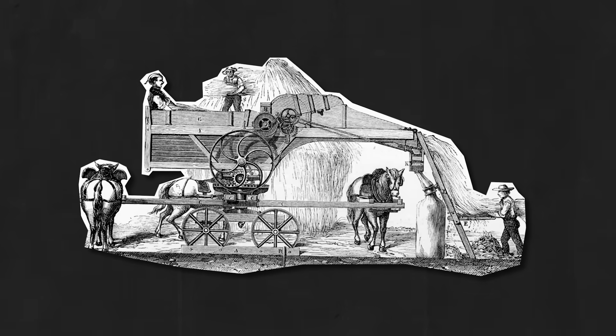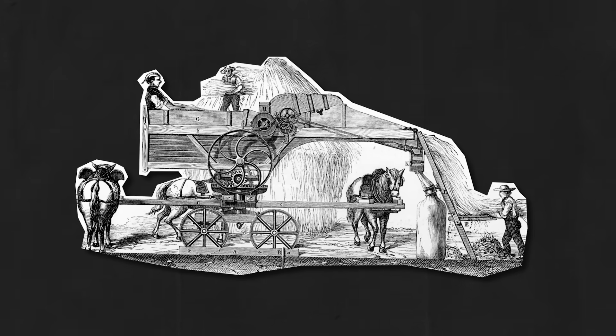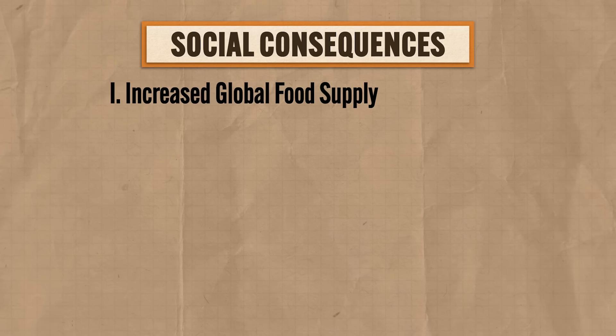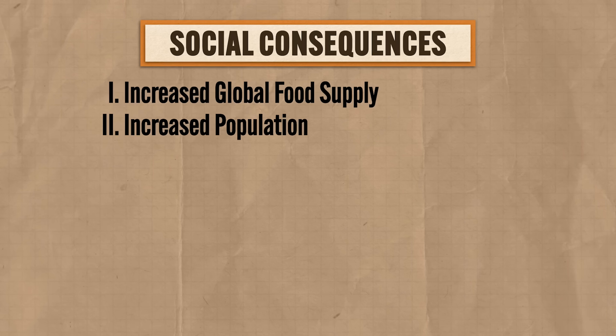As industrialization was spreading, it had major social consequences. First, there was a significant increase in the global food supply — because mechanization was being applied to farms and more land was coming under cultivation, the food supply increased significantly across industrialized nations. Second, and related to the first, there was a significant increase in population. With more food available, more people could be fed, leading to massive global population growth. Because more food equals more babies. Additionally, because people had enough food and their diets were becoming more varied, their lifespans increased.